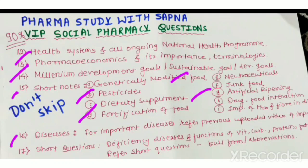Also prepare the importance of water and fiber in our diet. For diseases, prepare different types according to their classification, including mode of transfer, causative organism, symptoms, and prevention and precautions. A list of important diseases has already been provided in a previous video — please refer to that for detail. For short questions worth one or two marks, these are mostly based on deficiency diseases, functions of vitamins, carbohydrates, proteins, and fats, along with different abbreviations and their full forms.